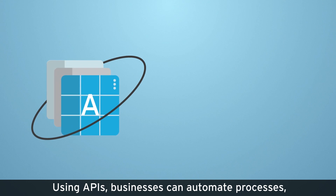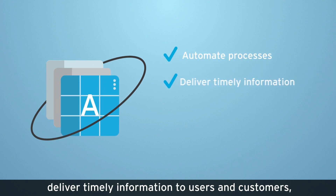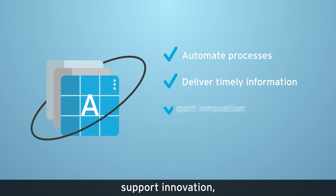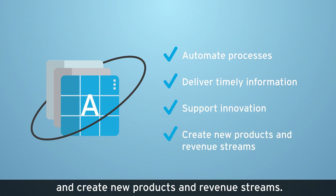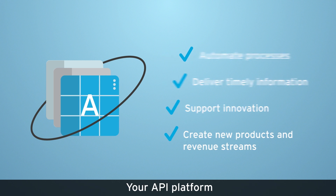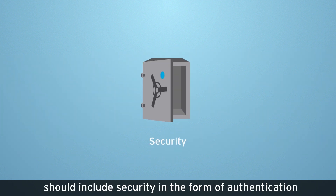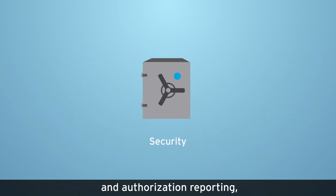Using APIs, businesses can automate processes, deliver timely information to users and customers, support innovation, and create new products and revenue streams. Your API platform should include security in the form of authentication and authorization reporting,